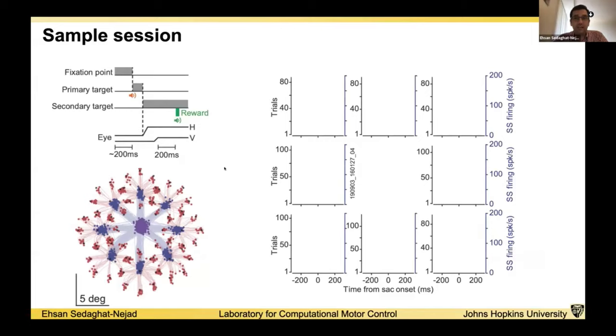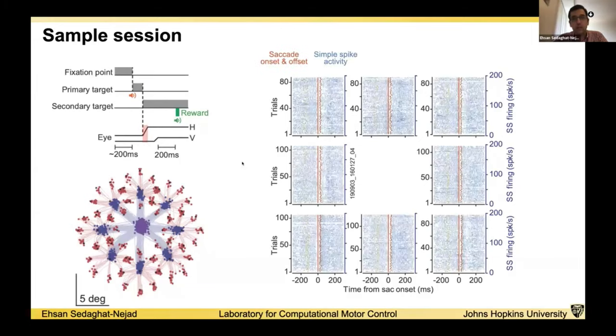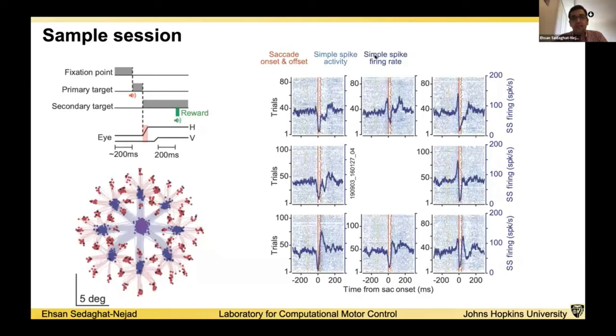If you look at the activity of Purkinje cells during the saccades, here's the saccade onset. What we'll see is that the estimated simple spike firing rate of the Purkinje cells does indeed show modulation for saccades, but the activity is complex. There is no emerging pattern of activity for the simple spikes.